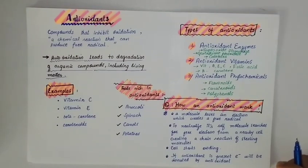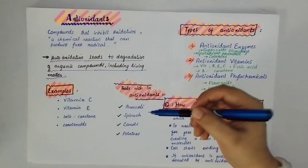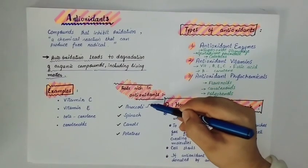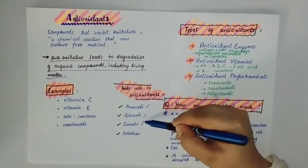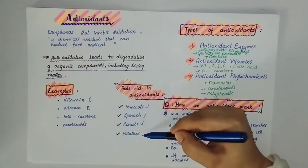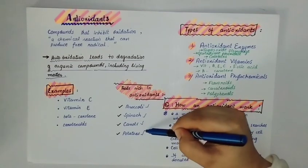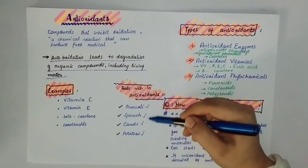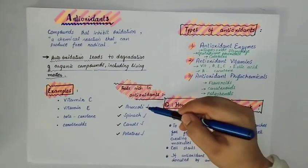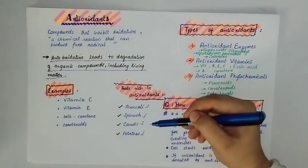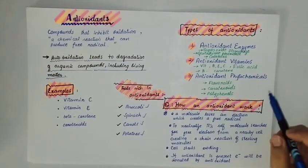These naturally occur in the foods we have. Which foods contain antioxidants? Broccoli, spinach, carrots with carotenoids, and potatoes. These are all rich in antioxidants with high antioxidant content.